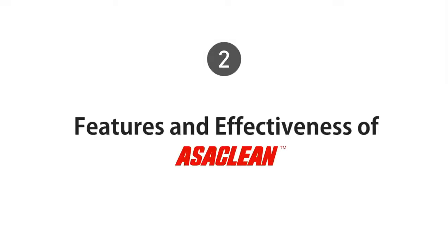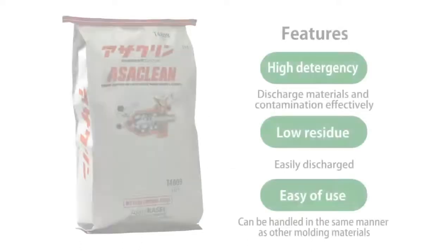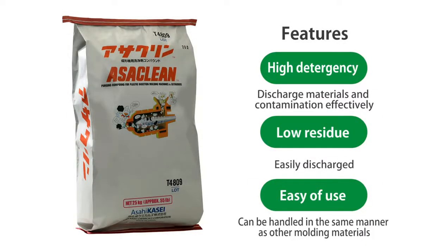Here's a brief overview of OssiClean's features. The three main features of OssiClean are: High Detergency — OssiClean's affinity for contamination is highly effective and will remove it completely; and Low Residue — OssiClean has a low adhesiveness to metal surfaces so it can be easily discharged.